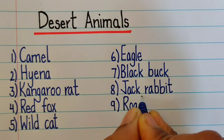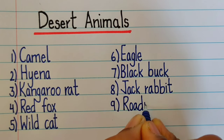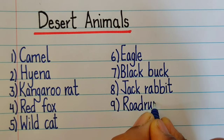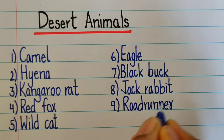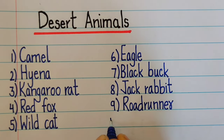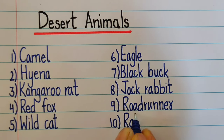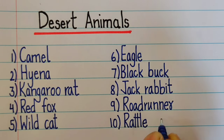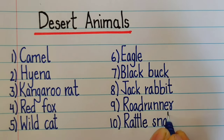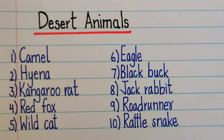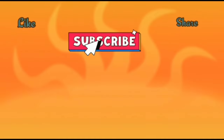Ninth one is road runner — r-o-a-d r-u-n-n-e-r. And the tenth one is rattlesnake — r-a-t-t-l-e-s-n-a-k-e. Thanks for watching the video, do like.